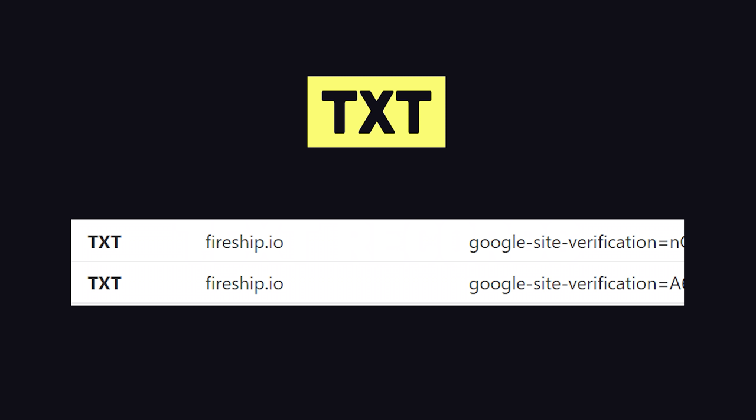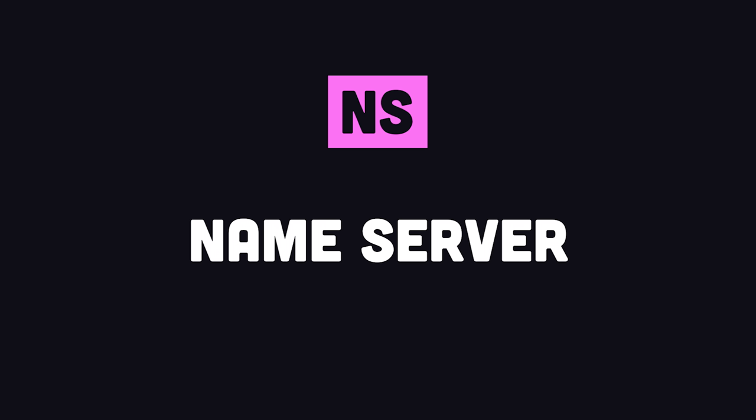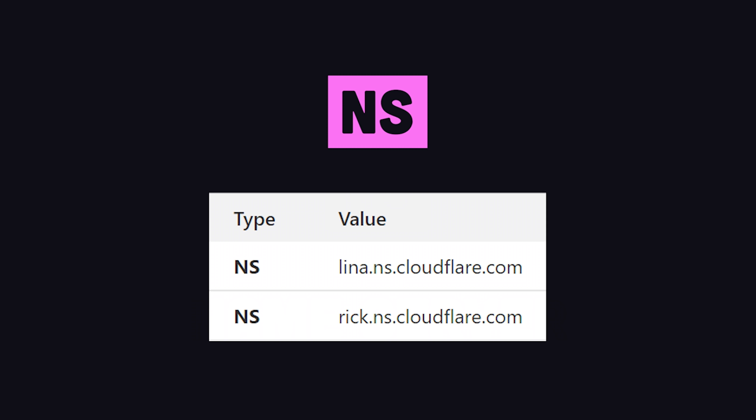Text records are often used to communicate with third parties to verify ownership of the domain. And finally, we have the NS or Nameserver record, a URL that the internet can ping to find our IP address. There's almost always two of them for better reliability.